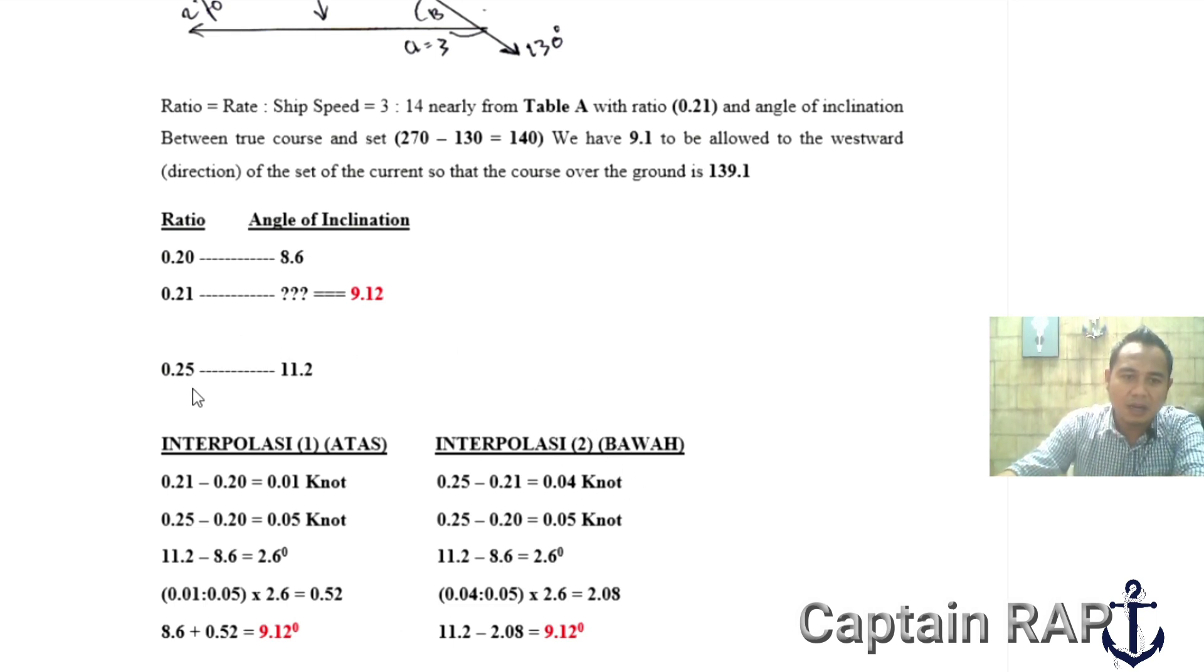Bagaimana dengan interpolasi dari bawah? Kalau interpolasi dari bawah berarti kita melakukan penghitung dari bawah. Selisih antara 0.25 dengan 0.21 itu 0.04, kemudian selisih antara 0.25 dengan 0.20 itu hasilnya 0.05. Nah maka kita hitung dari bawah 0.04 dibagi 0.05 dikali 2.6 hasilnya 2.08. Karena ini interpolasi dari bawah maka teman-teman kurangkan dari 11.2, kurangkan dengan hasilnya 2.08, jadi sama 9.12. Jadi 2 cara ini sebenarnya membuktikan bahwasannya hasil yang teman-teman dapatkan itu sudah benar.